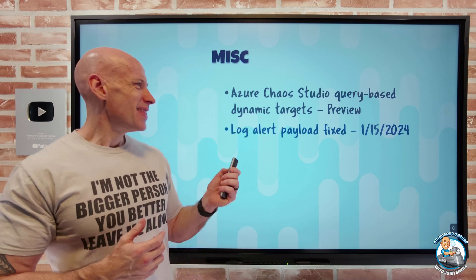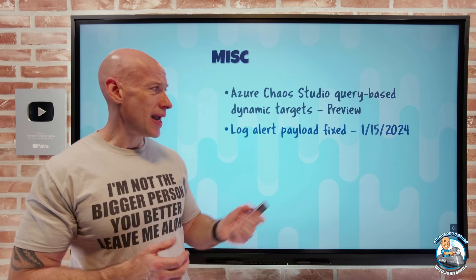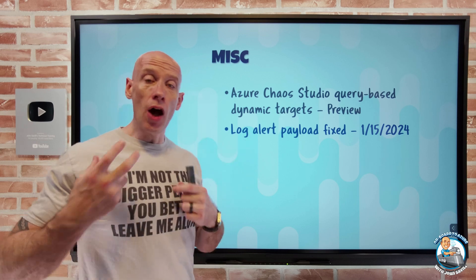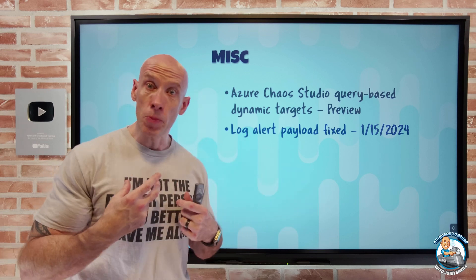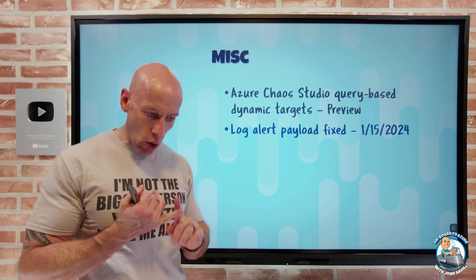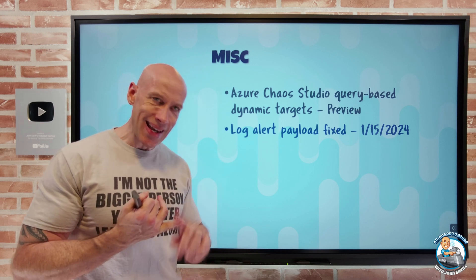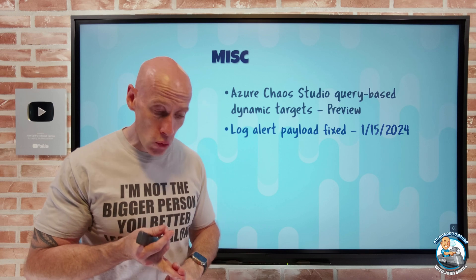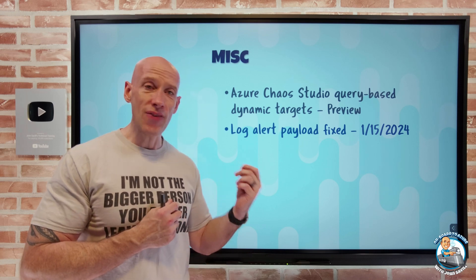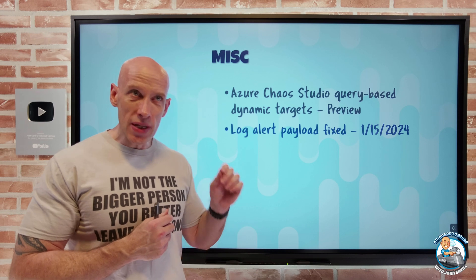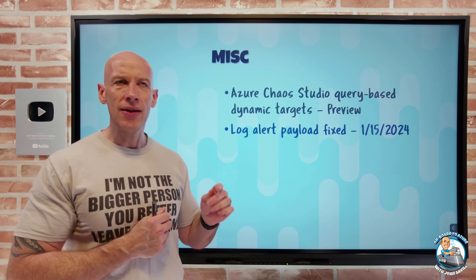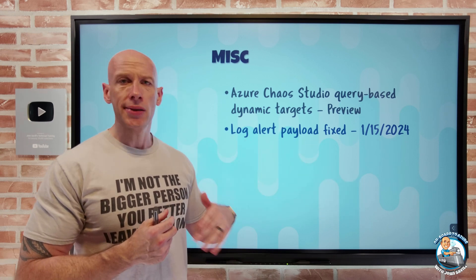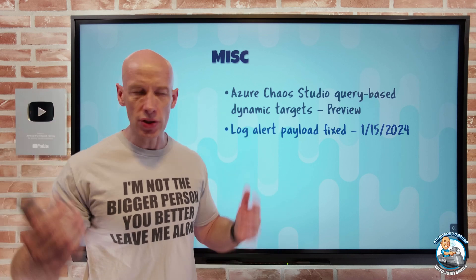There was also a bug in log alert payloads that will be fixed on the 15th of January 2024. When you have an alert based on a Log Analytics query, you get a payload back. In the V1 schema, the result count was showing the latest evaluation count rather than the count at the time the alert fired. In the V2 log alerts — used if you're on API version 2020-05-01 or later — the metric value was null. Both will be fixed to return the correct values.